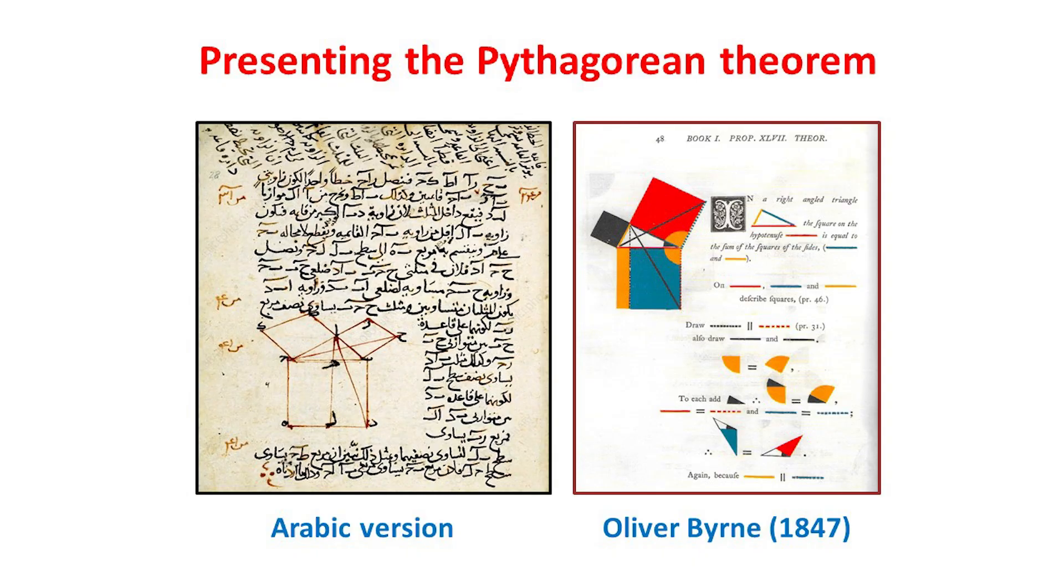Here are two contrasting presentations of the Pythagorean theorem, both of them showing Euclid's proof. The first is taken from an Arabic text dating from the Middle Ages, while the second appeared in a remarkable work of 1847 by Oliver Byrne, who used coloured diagrams and symbols instead of letters for the greater ease of learners.